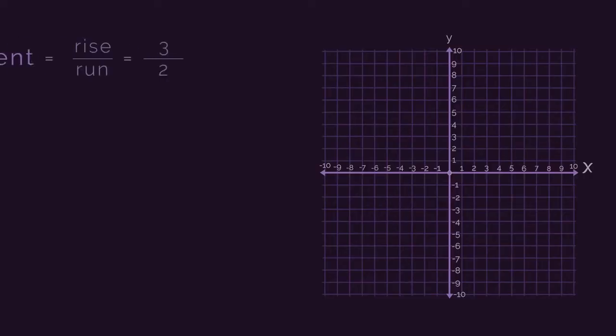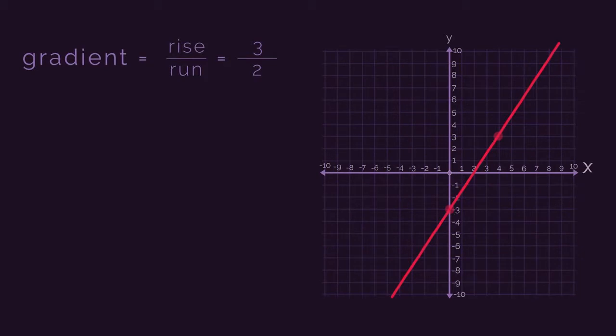But what do these numbers really mean? A gradient of 3 over 2, and a gradient of negative 2. Look at the graph. A 3 over 2 gradient means that for every two squares we go along, we go up 3. And then a negative 2 over 1 gradient. Every time we go along 1, we go down 2.